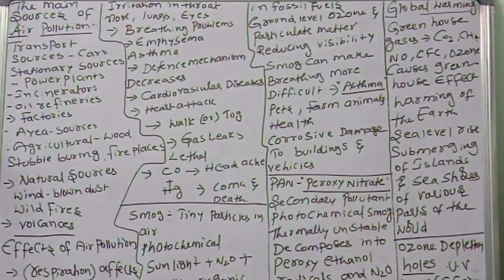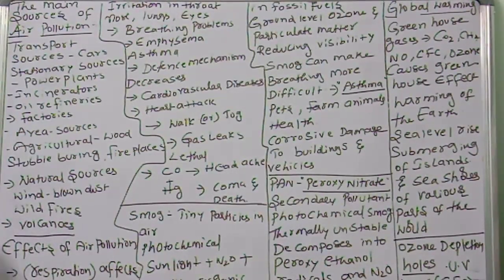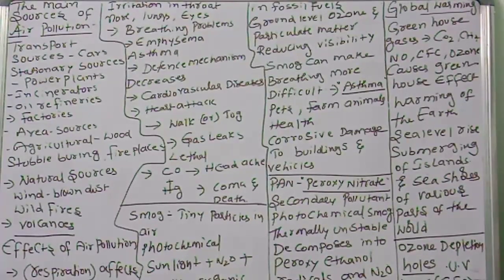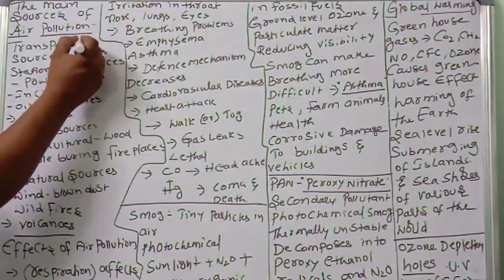Today we are going to discuss the next concept of air pollution — the main sources of air pollution. The first source is transport sources.